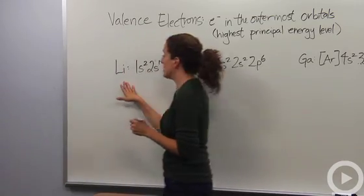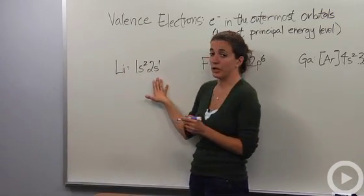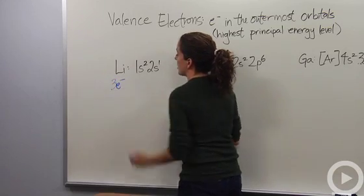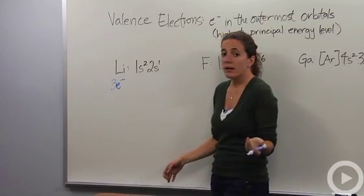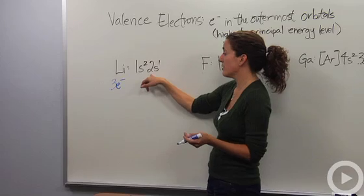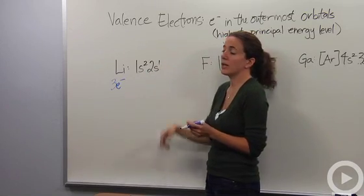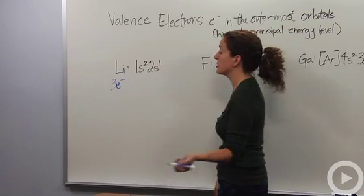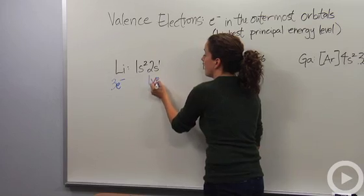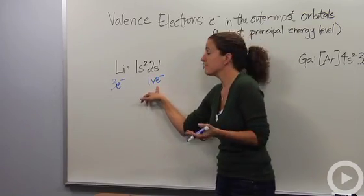Lithium has a total of three electrons using this electron configuration. But it only has one valence electron. The highest energy level is two, and there's only one electron in the second principal energy level. So we say it has one valence electron. VE is going to indicate valence electrons.